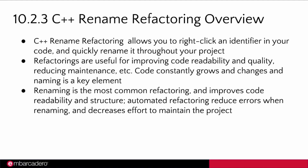I'd like to start with Rename Refactoring for C++. As code grows, you often need to change it — rename identifiers, move code around, reorganize — just to keep the code maintainable. This process is called Refactoring, and it's very useful for keeping your code quality, reducing maintenance, and improving readability. It's essential to look after your code as it grows and changes.